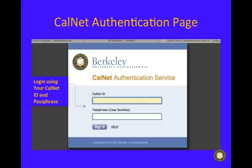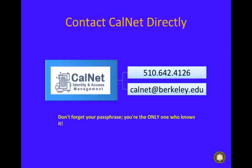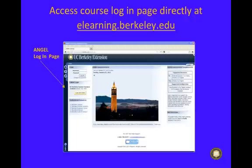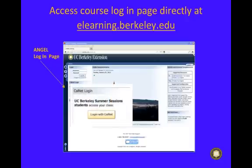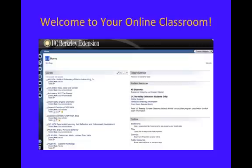This will take you to the CalNet Authentication page. Log in using your CalNet ID and passphrase. If you don't already have your CalNet ID, you should contact CalNet directly. Another option for logging into your classroom would be to go directly to elearning.berkeley.edu. Ignore the login box for extension students and look for CalNet login for summer session students. Once you've done that, you'll find yourself on the home page of the Learning Management System Angel.